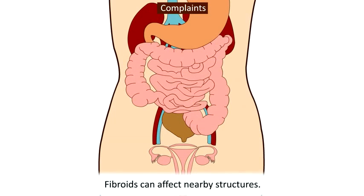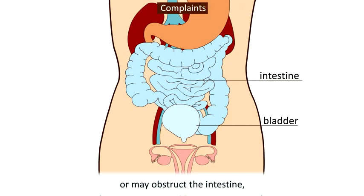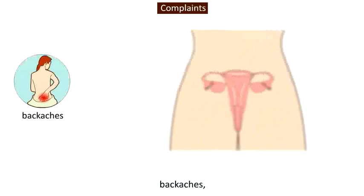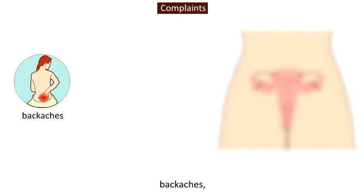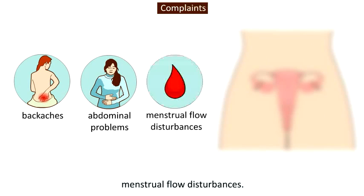Fibroids can affect nearby structures. They can cause compression of the bladder, which may lead to urinary complaints, or may obstruct the intestine, which may result in constipation. Other complaints can be back aches, abdominal problems, and menstrual flow disturbances.